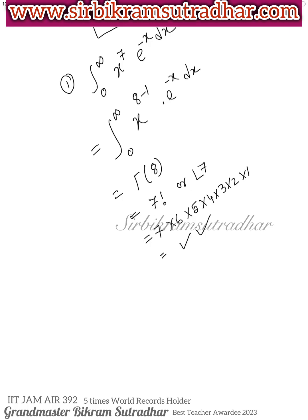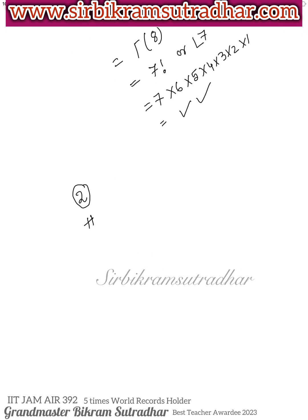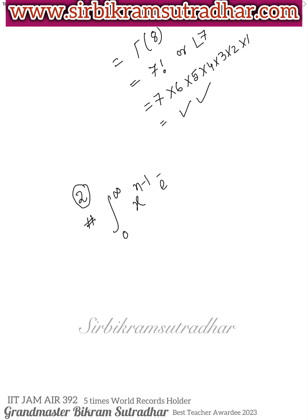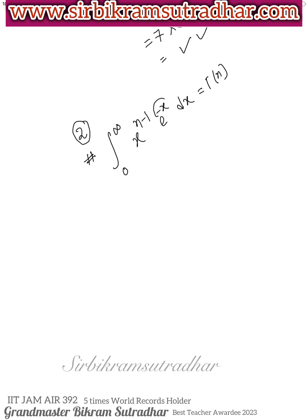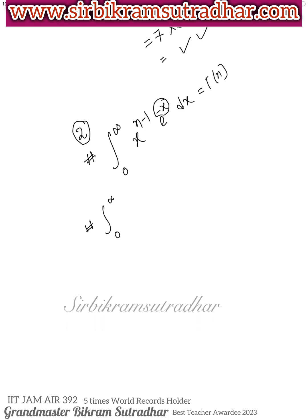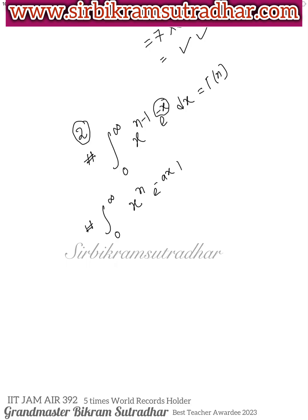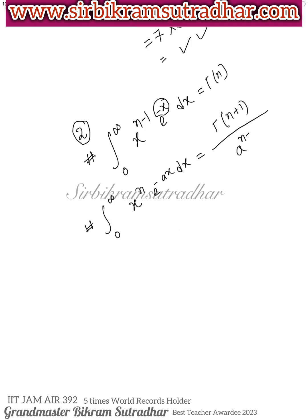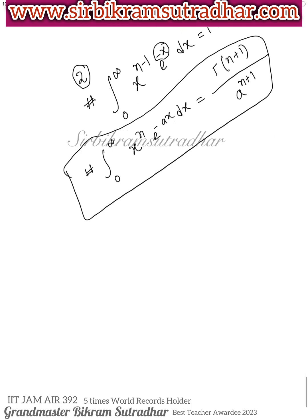Before question 2, ek aur formula seekhte hain. We know 0 to infinity x^(n-1) e^(-x) dx = Gamma(n). But if in the integration we have x^n e^(-ax) dx, the shortcut formula will be Gamma(n+1) / a^(n+1). Yad rakho yeh formula.